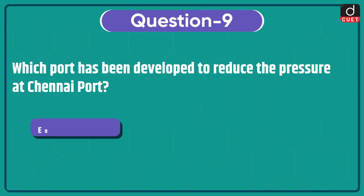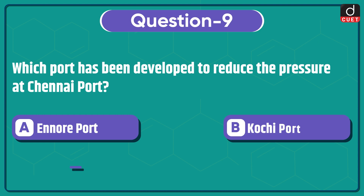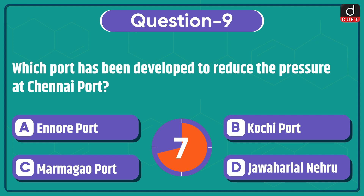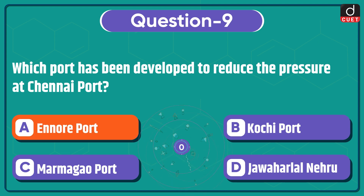Next question: which port has been developed to reduce the pressure at Chennai Port? Ennore Port, Kochi Port, Marmagao Port, or Jawaharlal Nehru Port? The correct answer is option A, Ennore Port.